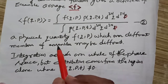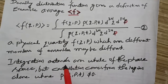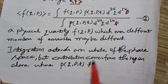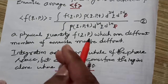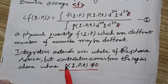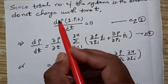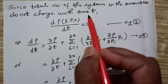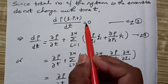Now you will see that there are some integrations. These integrations — what do they signify? The integration extends over the whole of the phase space, but contribution comes only from regions where ρ(q,p,t) is not equal to zero. Integration is almost lying over the whole of the phase space, but mainly contribution comes from the region where ρ(q,p,t) is not equal to zero. Now, since the total number of systems in the ensembles does not change with time, the total derivative dρ/dt is equal to zero. Let this be equation 3.